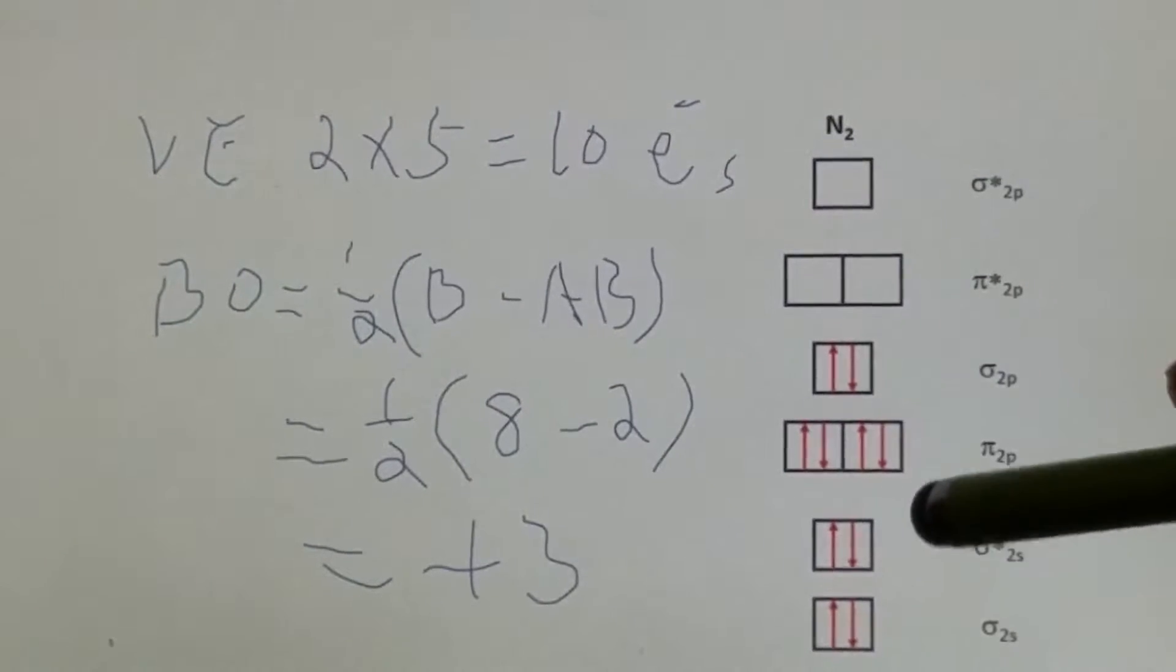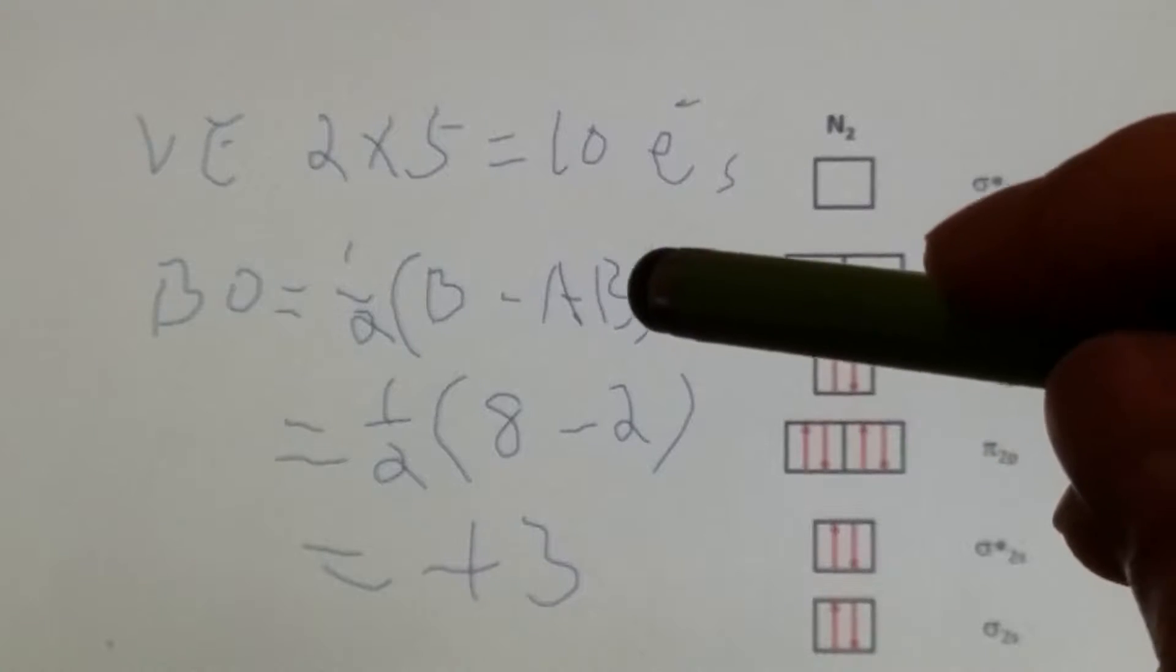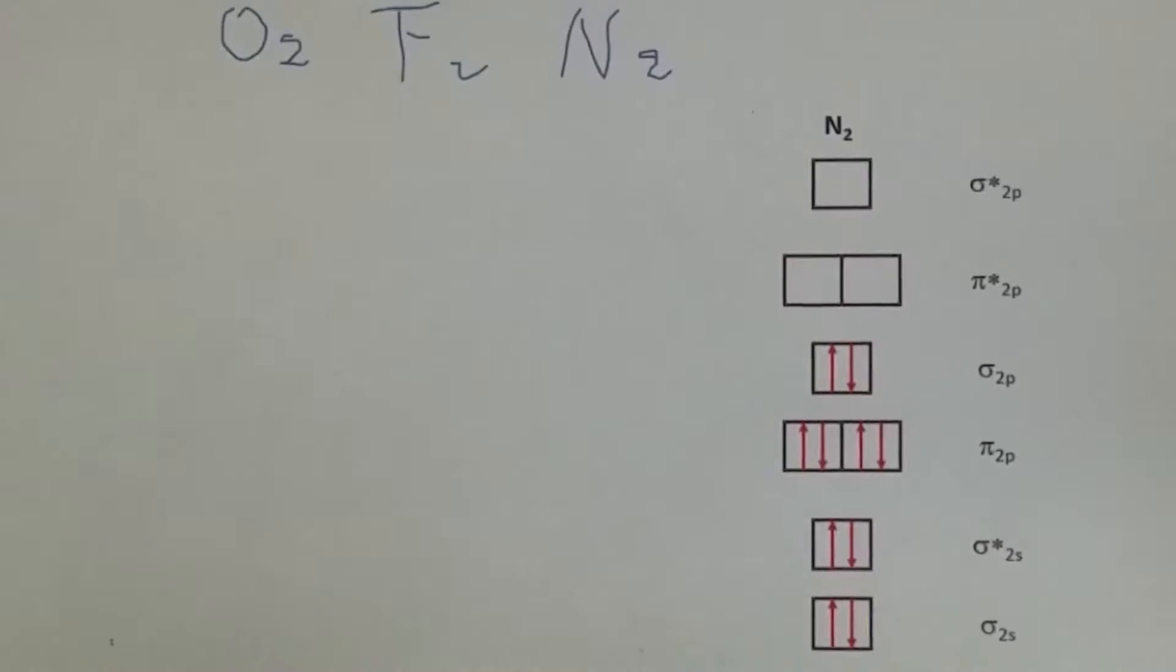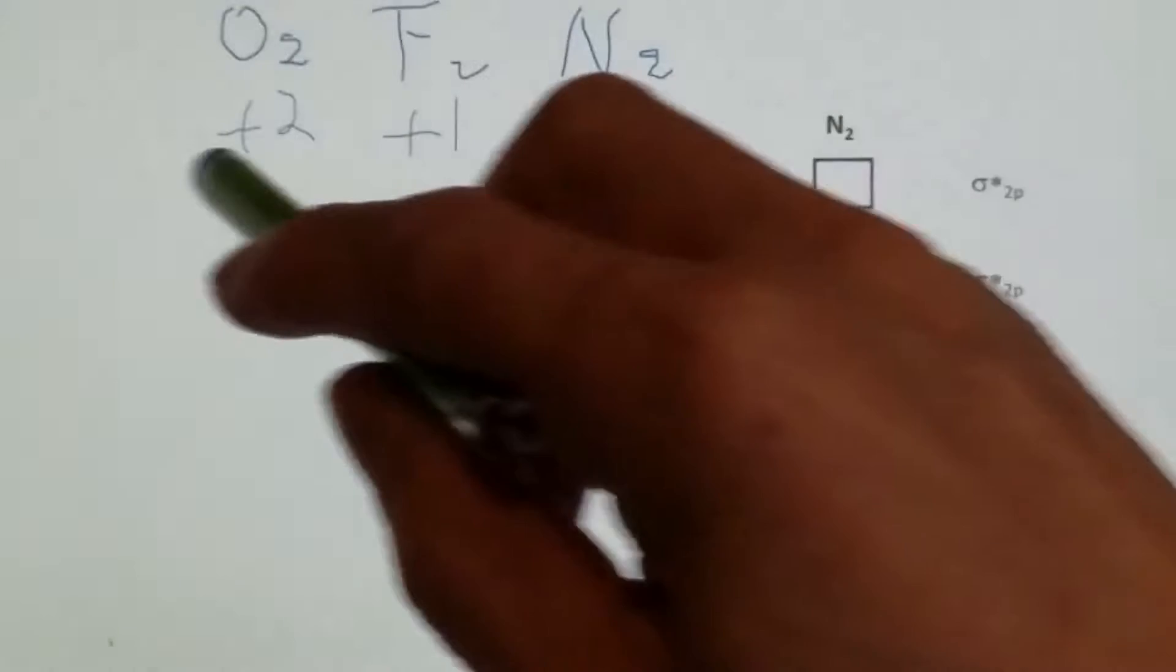Now we are ready to solve this problem. Based on the calculation we just did, the bond order for oxygen is positive 2, fluorine positive 1, nitrogen positive 3.